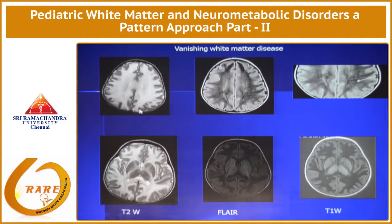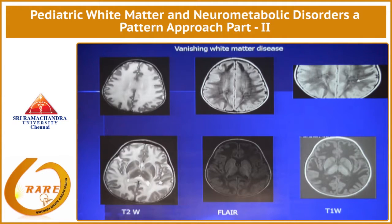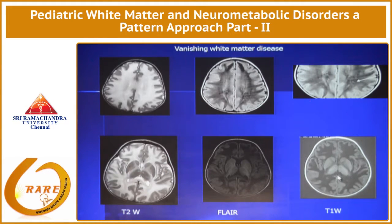She has a diffuse white matter abnormality. Remember, diffuse white matter involvement can be seen in Canavans, vanishing white matter, and MLC. But look at the FLAIR — it becomes very hypointense. This is really rarefied white matter, and you can see small spotty areas where the white matter has been spared. On T1, it shows intensely low signal — this is very typical of vanishing white matter.